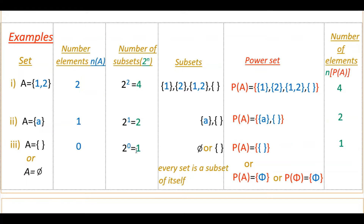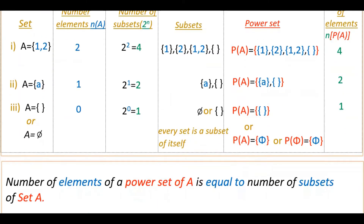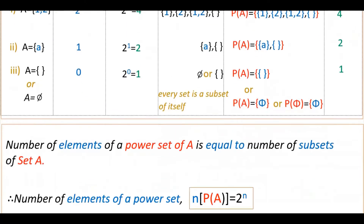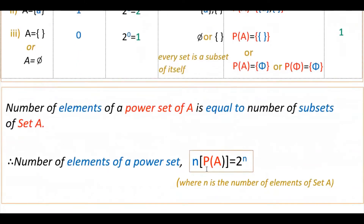From this table you will understand that the number of elements of P(A) is equal to the number of subsets of set A. You can write this as: n(P(A)) = 2^n, where n is the number of elements of set A.